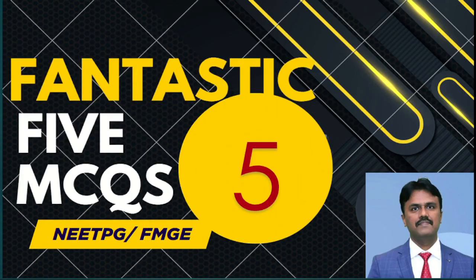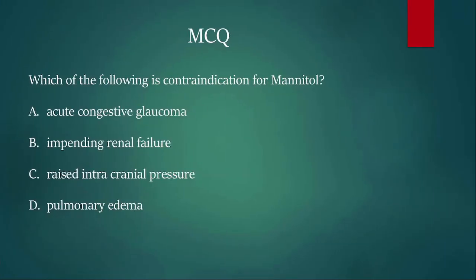Hi, and welcome. Let us discuss another session of Fantastic Five MCQs for NEET PG and FMGE. Stay till the last to understand very important concepts and connect pharmacology easily. The first question is: which of the following is a contraindication of mannitol? Options are: acute congestive glaucoma, impending renal failure, raised intracranial pressure, and pulmonary edema. You have five seconds to answer.